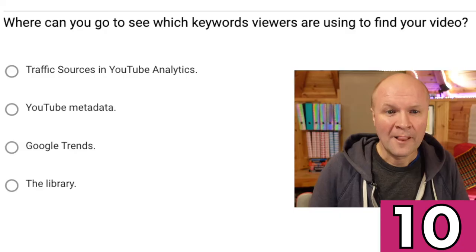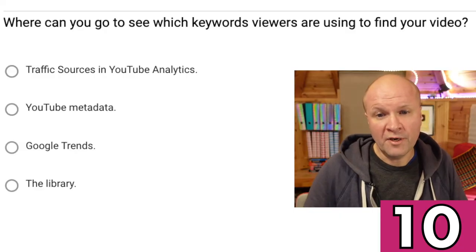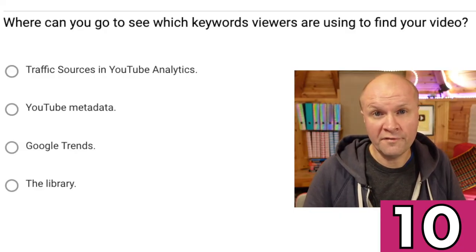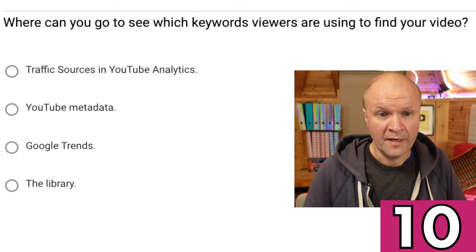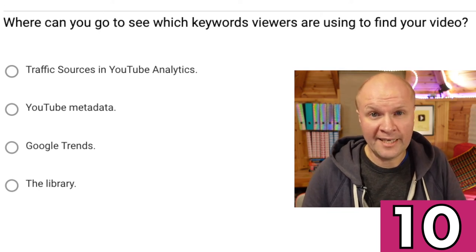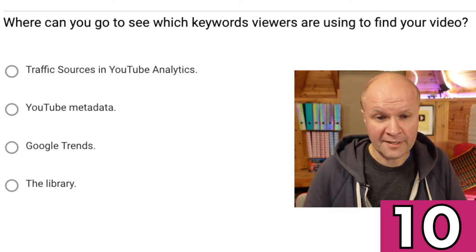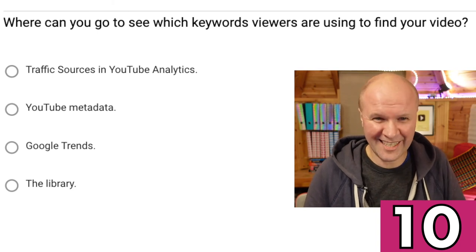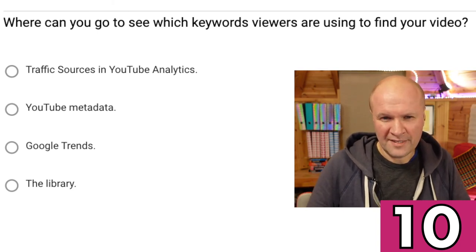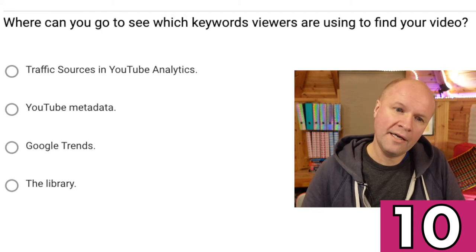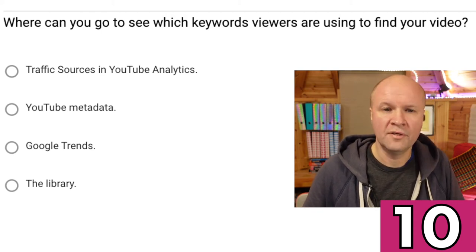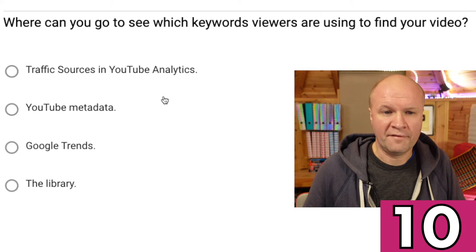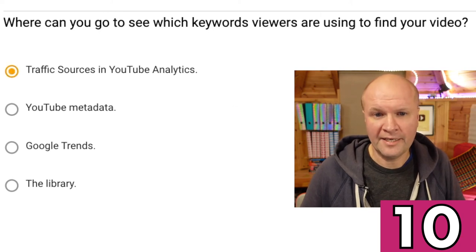We've got five more to go. Where can you go to see which keywords viewers are using to find your video? Traffic sources in YouTube Analytics, YouTube metadata, Google Trends, or the library? I would go to traffic sources in YouTube Analytics.